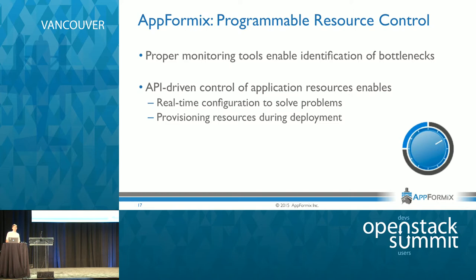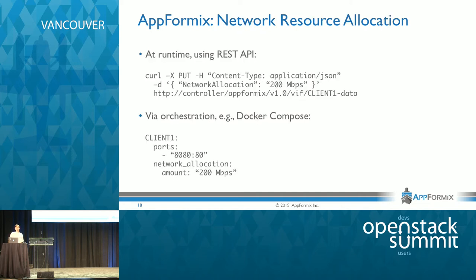Once you've identified those bottlenecks, what you need next is the ability to solve the problem. You need control to assign and allocate resources to the highest-priority applications. Appformix has an API-driven controller that is centrally managed and lets you allocate resources to the applications with the highest priority — both in real time or at the time you're provisioning the application. To give a simple example of what our REST API looks like: if you wanted to change the network allocation given to a virtual machine in real time, with a simple curl command you can make a PUT REST API call to set the network allocation to 200 megabits per second.